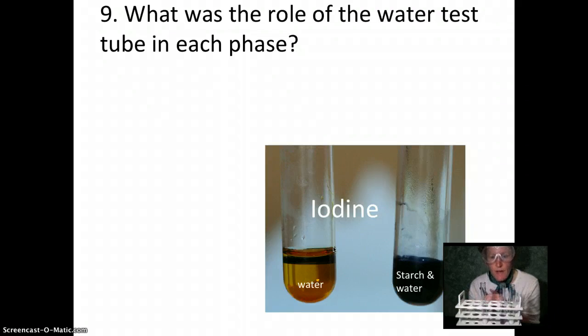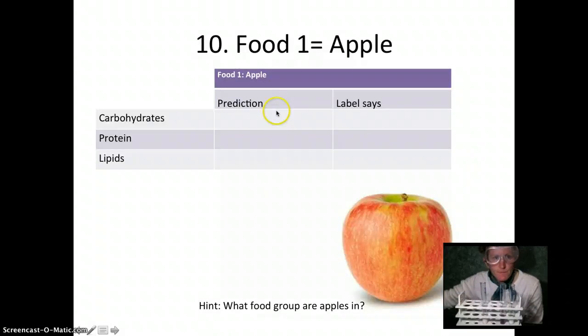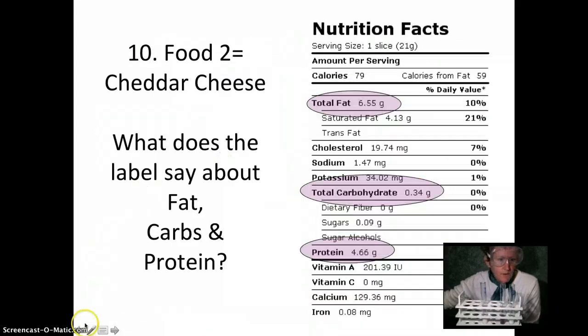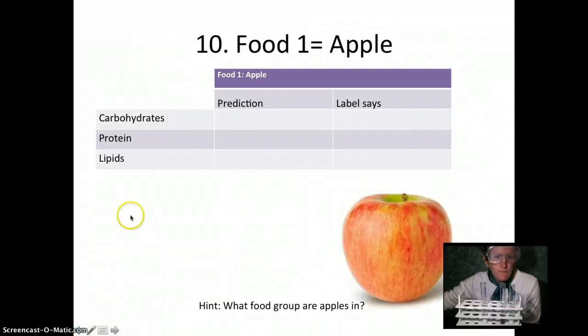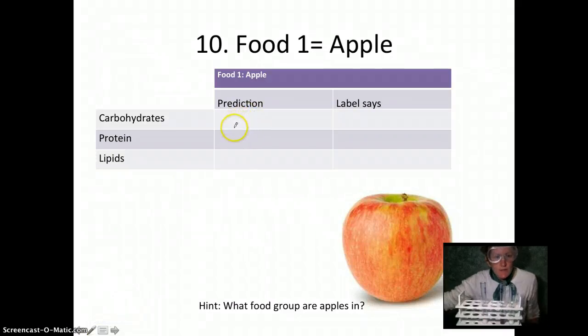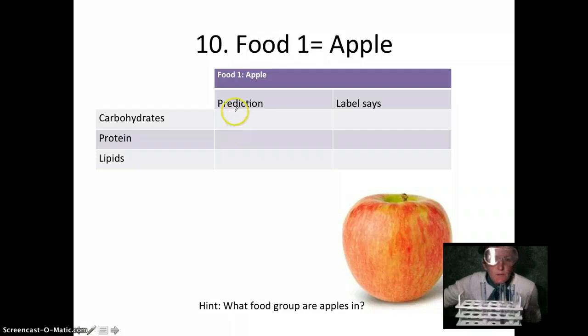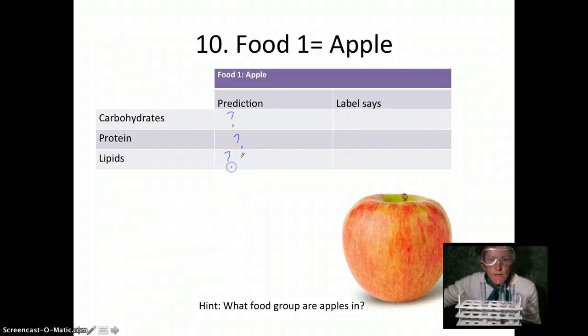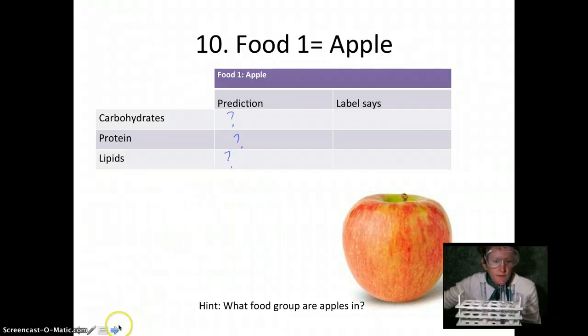Let's look at some other foods. I want you to predict if there are carbohydrates, proteins, and lipids in an apple. Write your predictions down. We know there's not starch, but do you think there might be other kinds of carbohydrates in an apple? How about protein? Are apples known for their high protein content? How about lipids? Do apples have lots of fat?